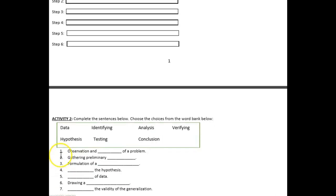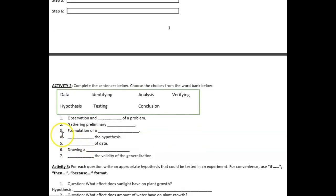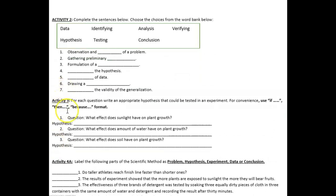Complete Activity Number 2: Complete the sentences below. Choose the choices from the word bank below. You have your data, identifying, analysis, verifying, hypothesis, testing, and conclusion. So you have here seven items for Activity Number 2.